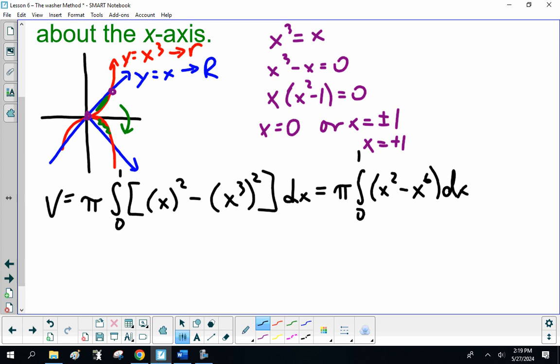Now, that's fairly easy to integrate. That is π times, let me see. I should use square brackets here. That's going to be x³/3 - x⁷/7 from 0 to 1.